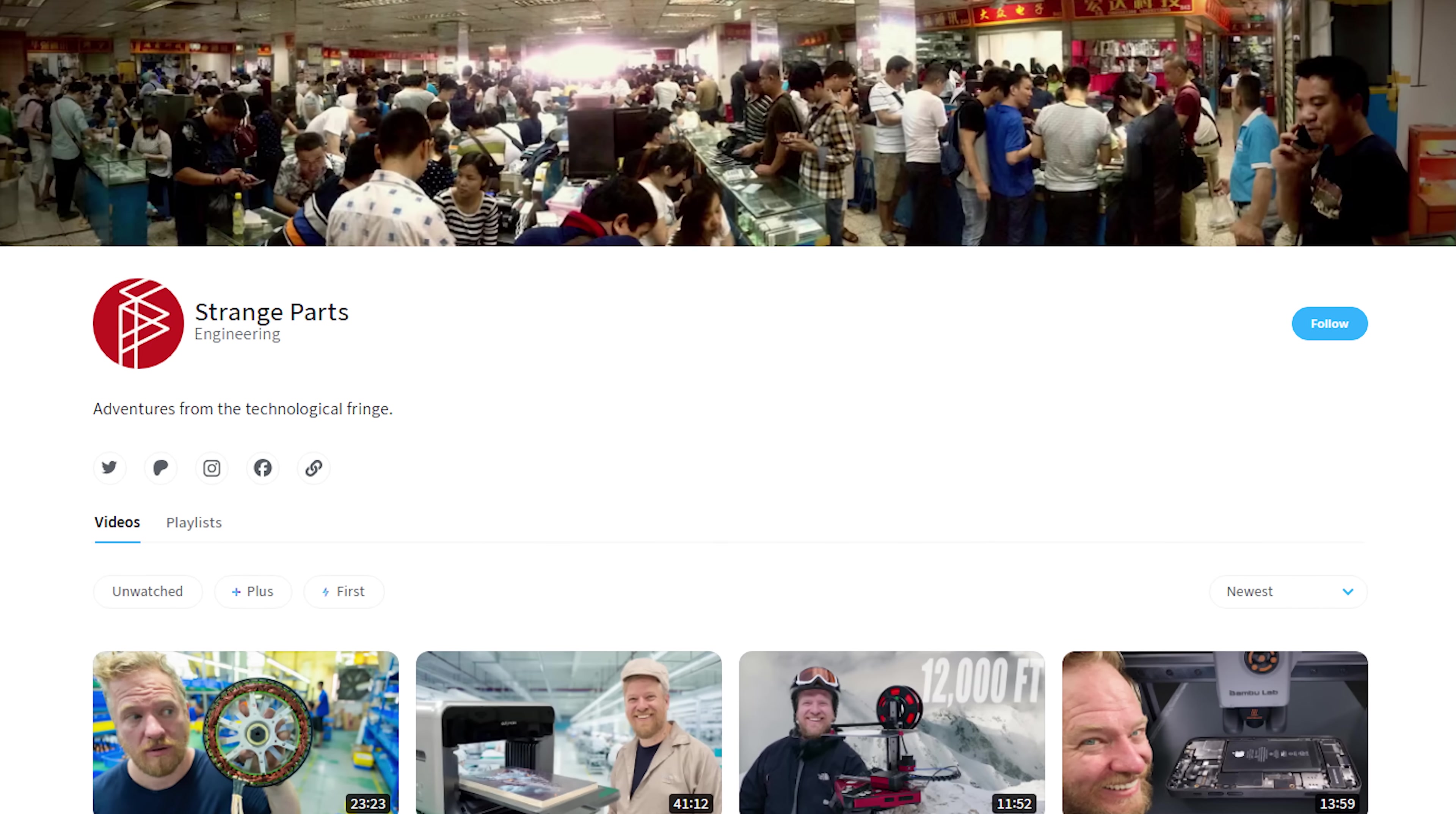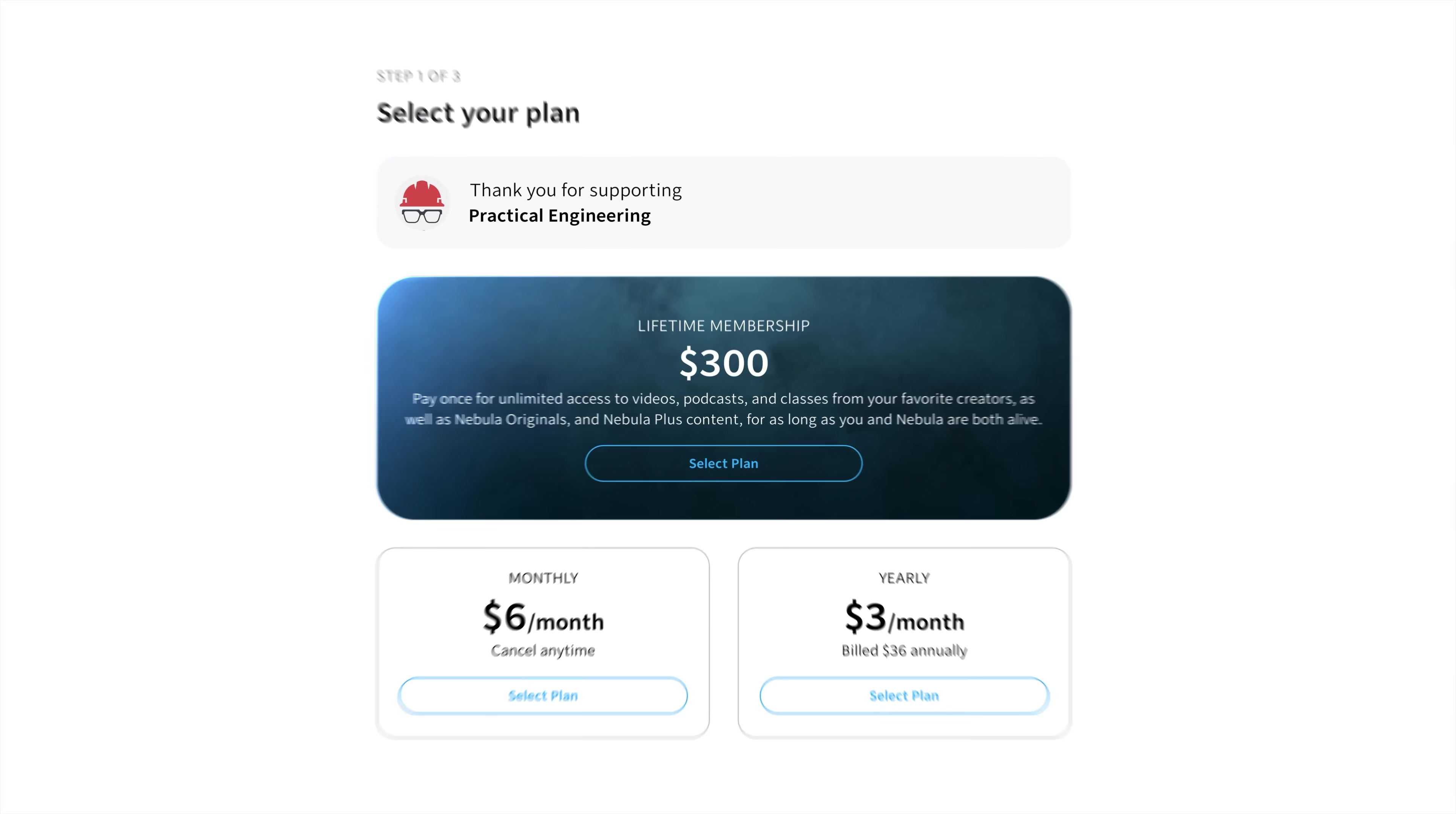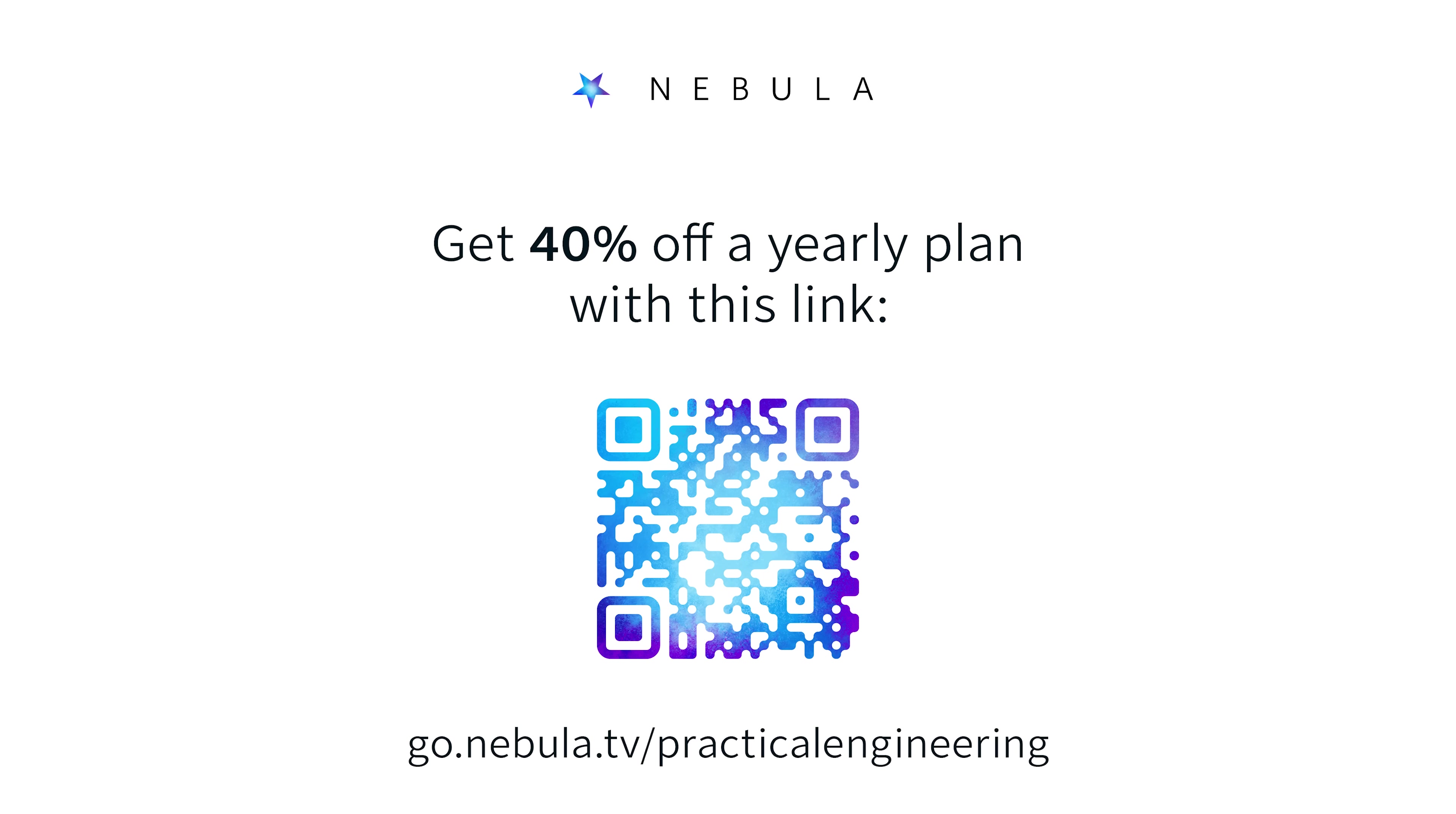Nebula is a streaming platform built by and for independent creators, including channels like Strange Parts, Integza, Real Engineering, and Hacksmith Industries. You get early access, no ads, and content that's thoughtful and well-researched. Plus, Nebula's got a lot of really impressive original content that can't be found anywhere else, like 17 Pages. If you want to give it a try, it's basically a cup of coffee a month. Watch 17 Pages and more only on Nebula, and if you use my link, go.nebula.tv slash practical engineering, you'll get 40% off. That's $36 a year or $3 a month. Scan the QR code or click the link below to start watching now.